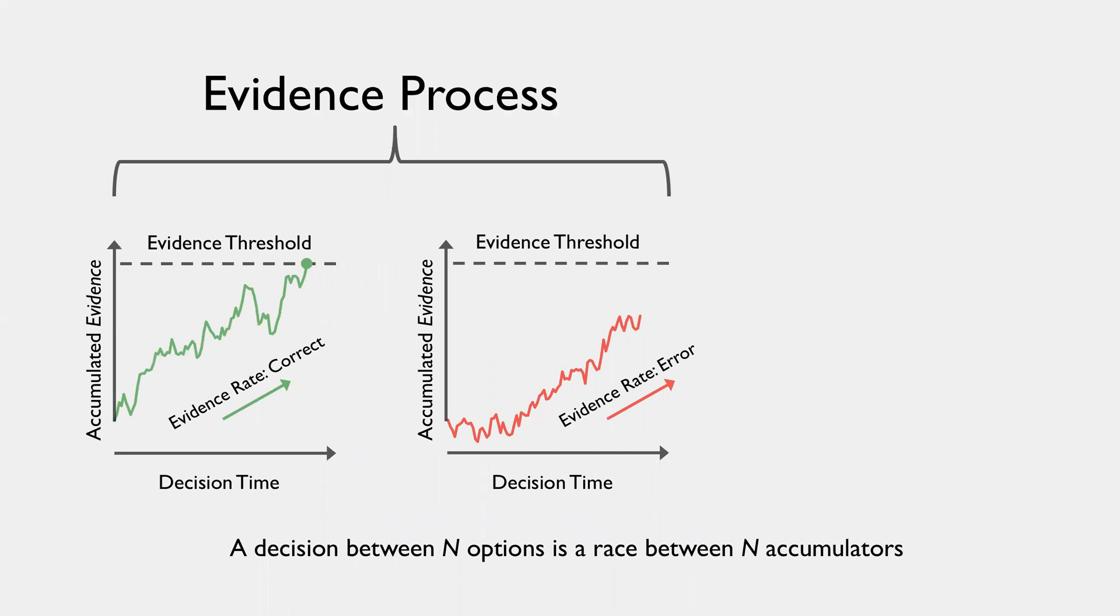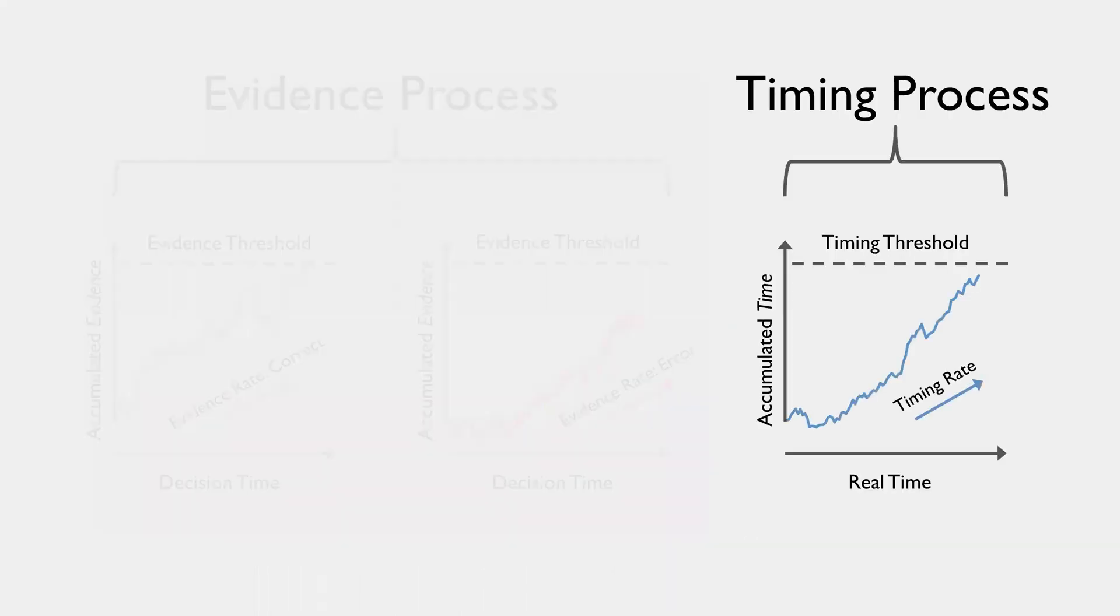So to do this, we start with that evidence process that I talked about before, where we have a decision between n options as a race between n accumulators. And to that, we're going to add a timing process.